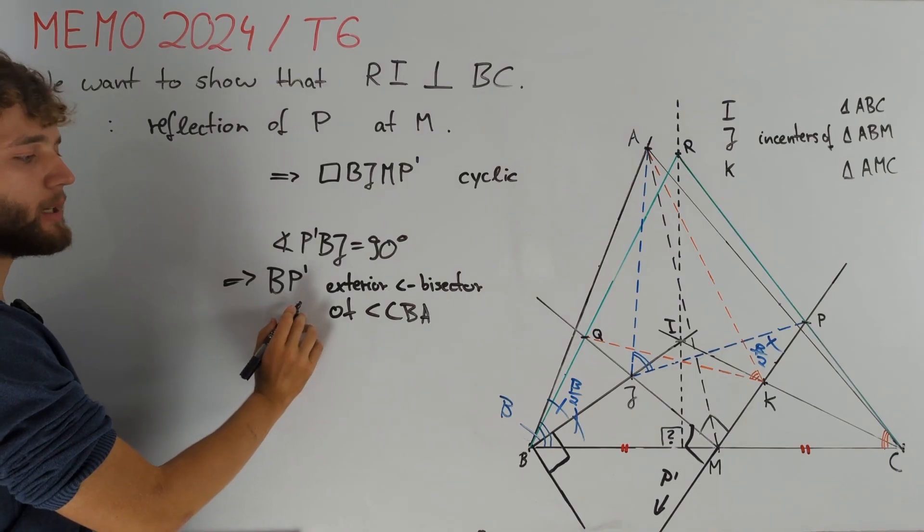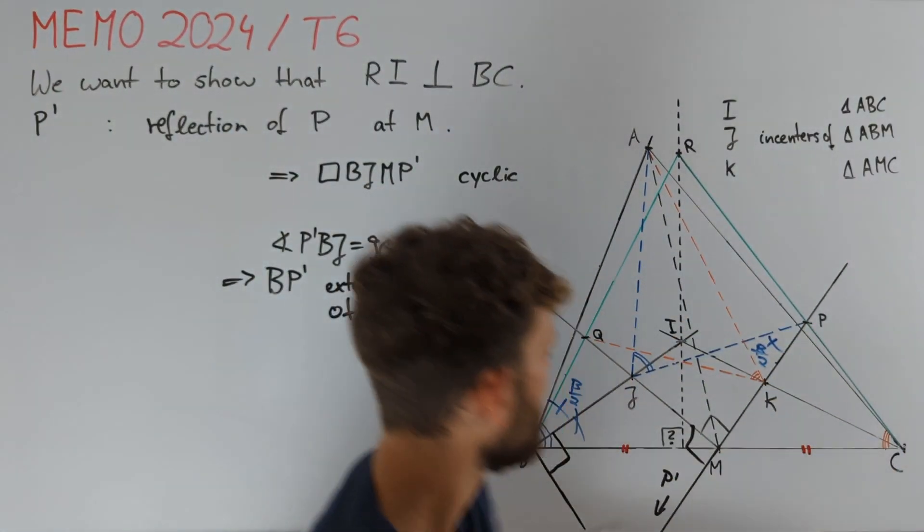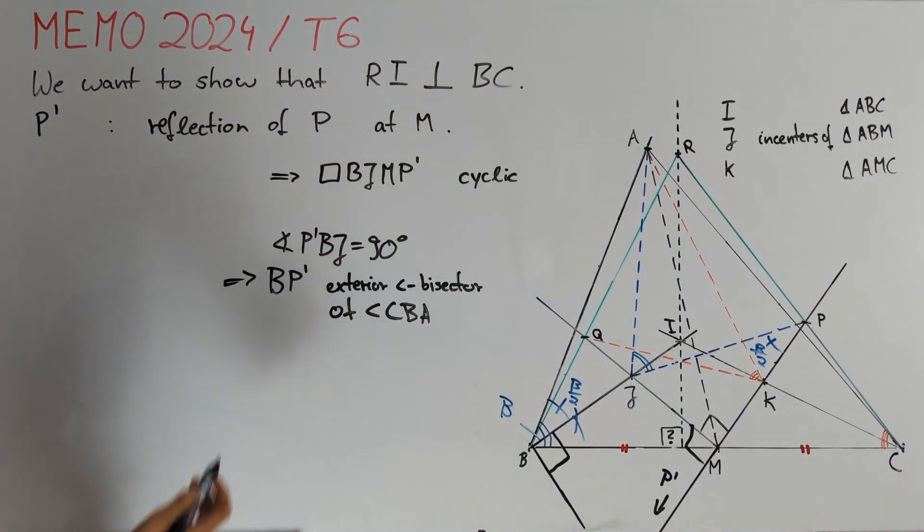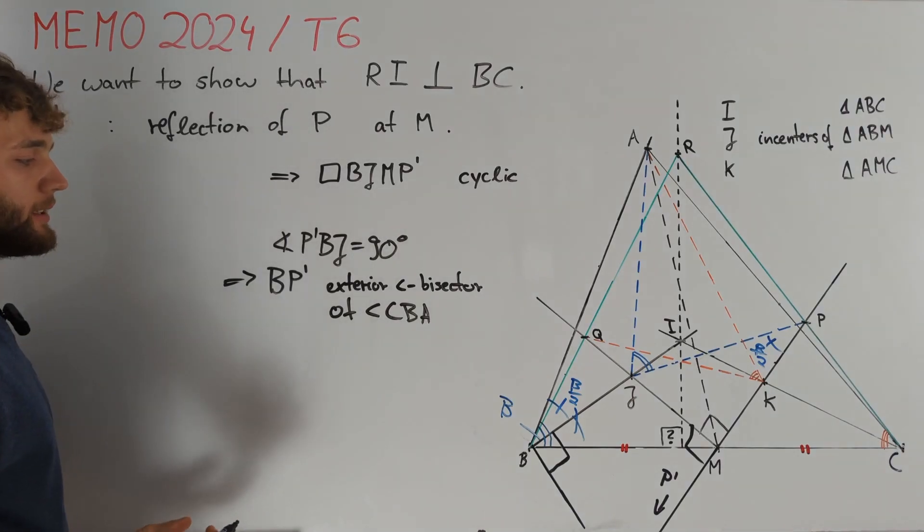Moreover, we can notice that BP' is just the reflection of line CP at M because P' is the reflection of P at M and B is the reflection of C.